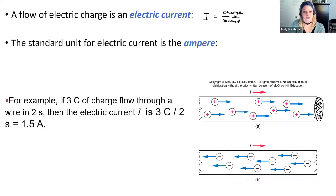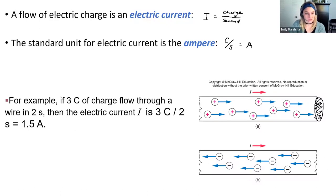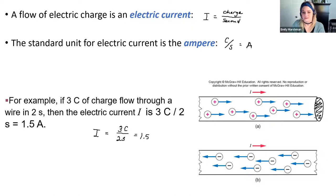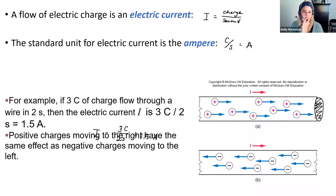The units for electric current are coulombs per second, also known as an ampere or amp. For example, if I have 3 coulombs of charge flowing through a wire in 2 seconds, the current is 3 coulombs divided by 2 seconds, which equals 1.5 coulombs per second, or 1.5 amps.